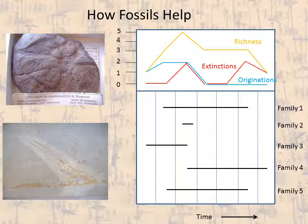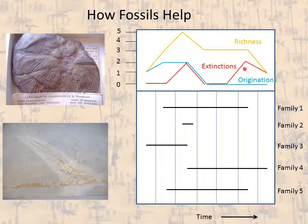That's quite useful. We can also plot the first appearances, which are originations, and the last appearances, which are extinctions, through time. Using that we can see how origination, extinction, and richness vary across taxonomic groups through time — and that helps us answer questions about the proximate factors.